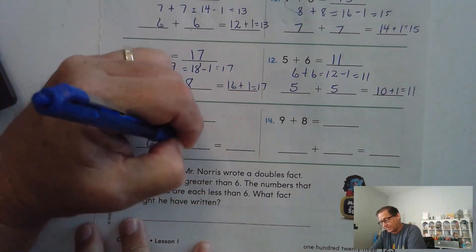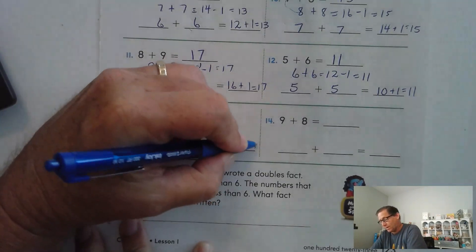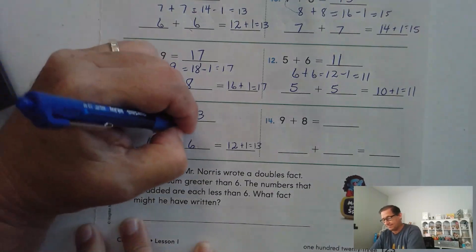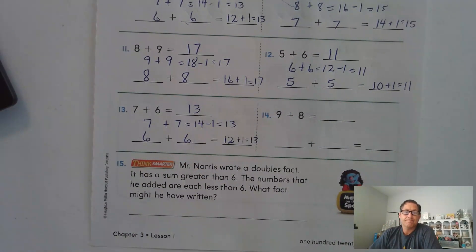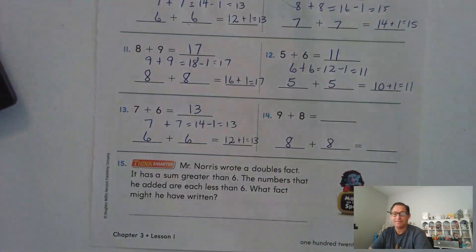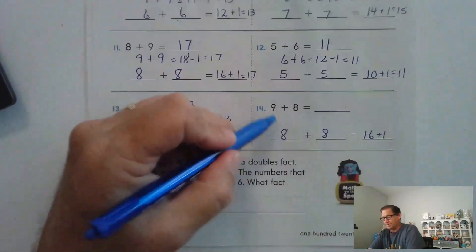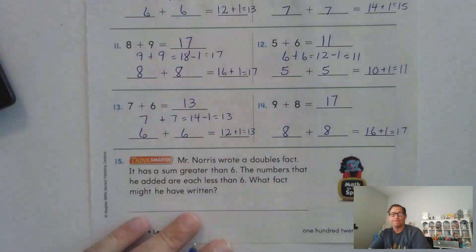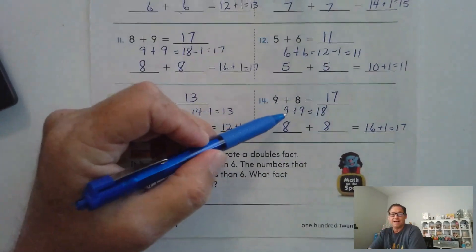7 plus 6: I can start with 6 plus 6, which is 12, and add 1. Or I could say 7 plus 7 is 14 and subtract 1 to get 13. For 9 plus 8, I could use the double fact 8 plus 8, which is 16, then add the 1 to equal 17. Or I could change the 8 to a 9, so I'd have double 9s and subtract 1.